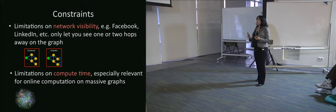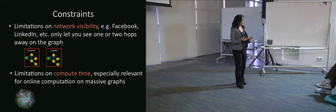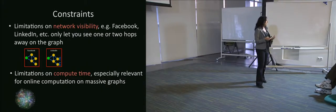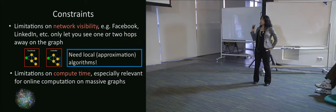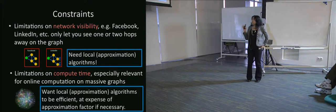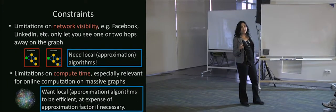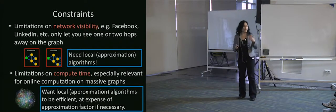There are also very serious limitations on compute time. These are really massive networks. If we want to compute something online, the compute time is very important. So for the first case, we need local algorithms because we can only do things locally. In the second case, we want the algorithms to be very efficient, even if it means we don't get quite as good an answer. We're usually more concerned about finding an answer quickly than finding the best answer possible in a long period of time.